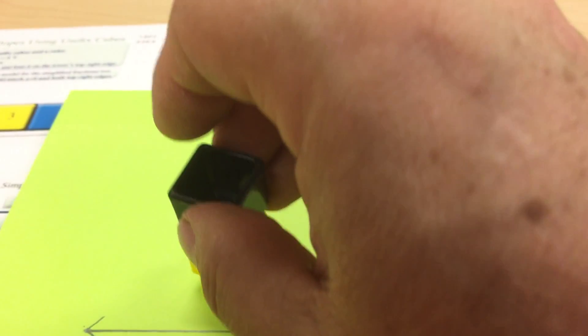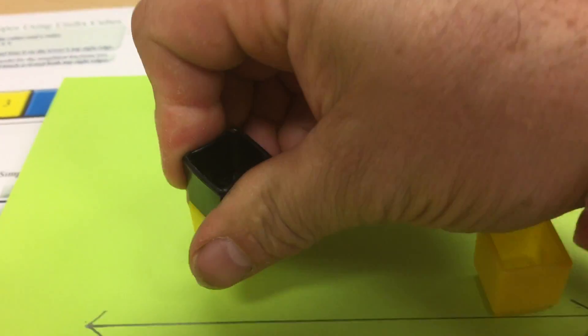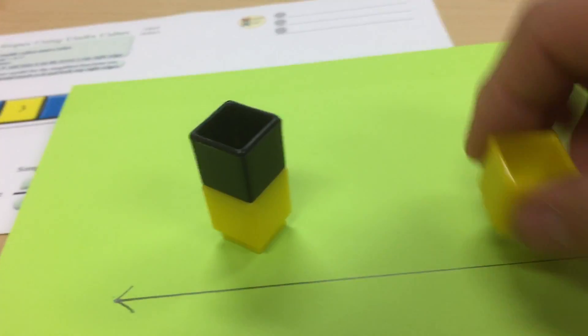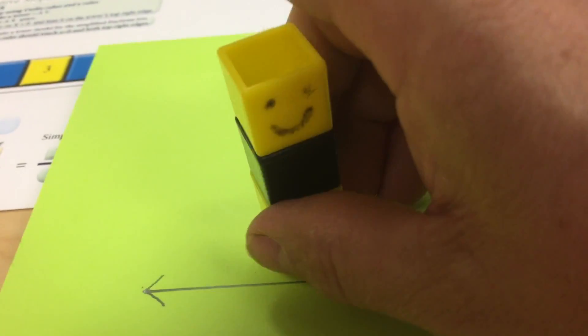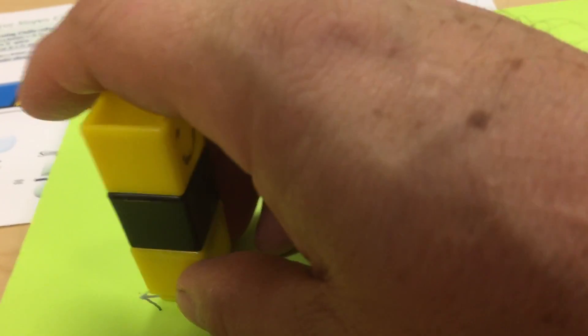I can stack these cubes and make the height rise. Here I now have a rise of three. So the height went up. Again, that's the rise.